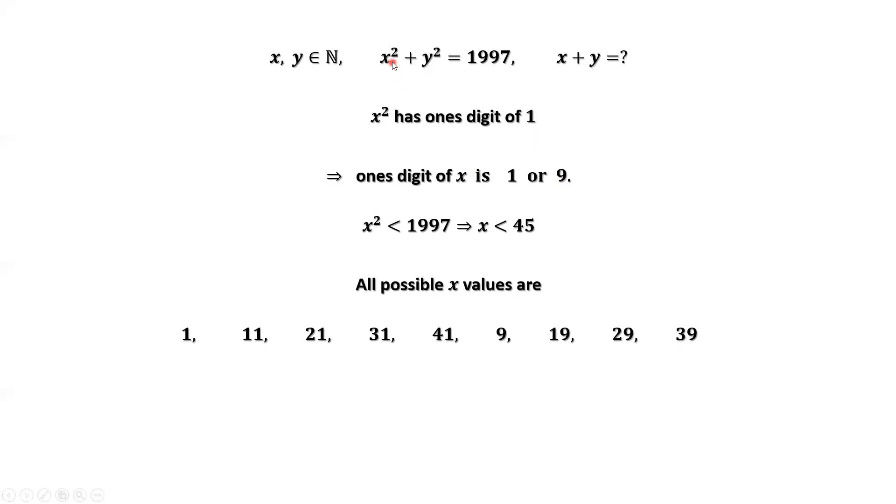From the given condition, x squared plus y squared equals 1997. Both x and y are bigger than 0. Therefore, x squared less than 1997. Taking square roots on both sides of this inequality, we have x less than 45. All possible x values are 1, 11, 21, 31. These numbers have one's digit of 1.